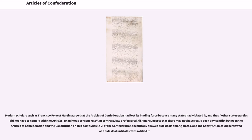Nevertheless, it is an interesting historical and legal question whether opponents of the Constitution could have plausibly attacked it on that ground. At the time, there were state legislators who argued that the Constitution was not an alteration of the Articles of Confederation but rather would be a complete replacement, so the unanimity rule did not apply. Moreover, the Confederation had proven woefully inadequate and was supposedly no longer binding. Modern scholars such as Francisco Forrest Martin agree that the Articles of Confederation had lost their binding force because many states had violated them. In contrast, law professor Akhil Amar suggests that Article V of the Confederation specifically allowed side deals among states, and the Constitution could be viewed as a side deal until all states ratified it.